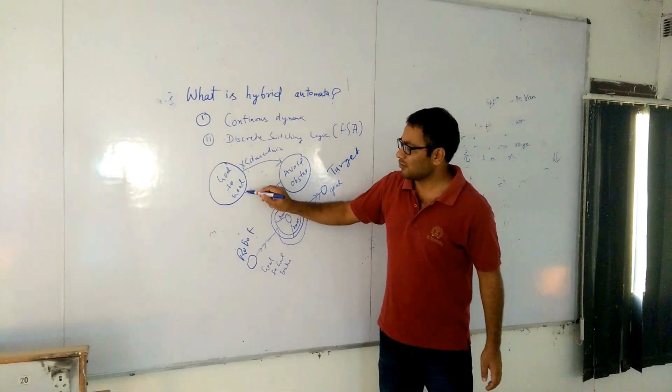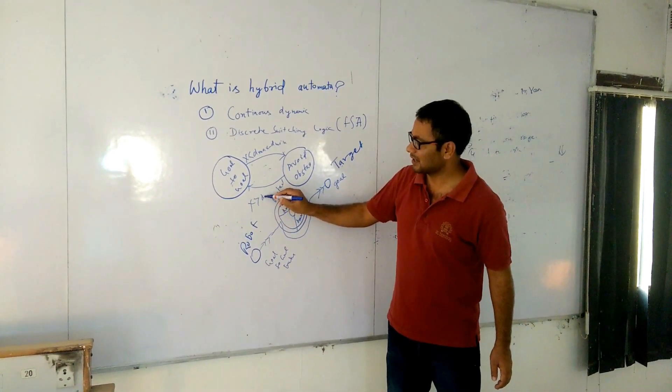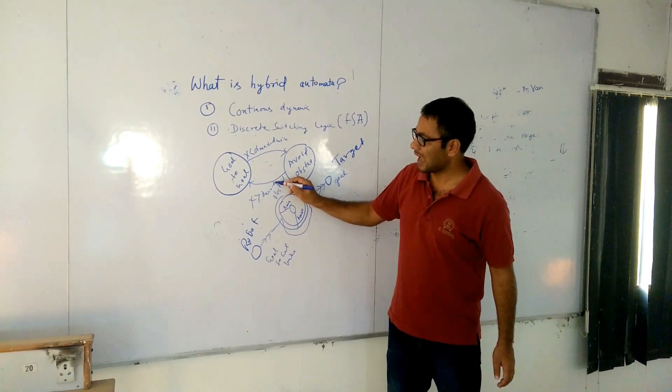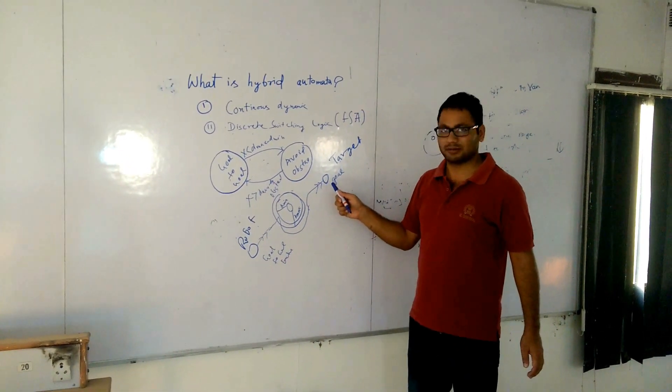Same way, once I move, once I find the threshold is greater than D max minus D minimum, then I will again follow this strategy and then I will follow the goal-to-goal behavior.